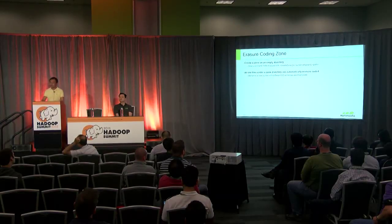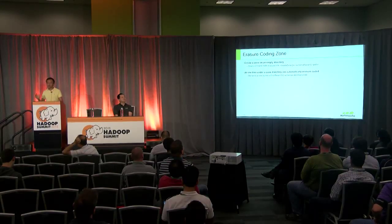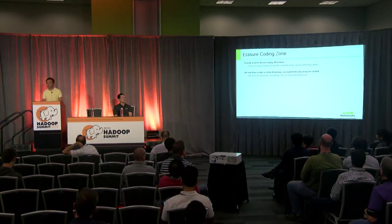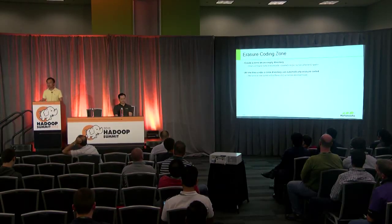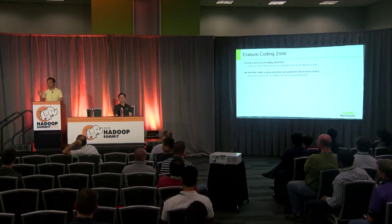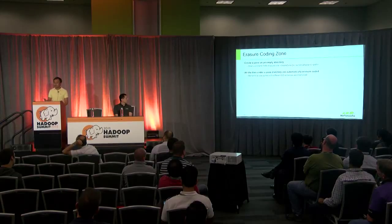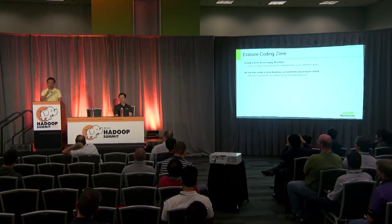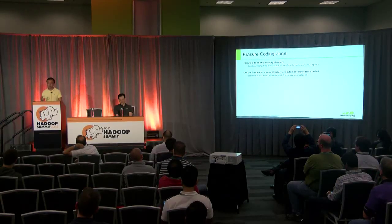On the name node side, we introduce a new concept: the EC zone — simply a directory. Administrators use a create zone command to convert an empty directory into an EC zone. All new files created under that EC zone directory are automatically erasure-coded. We don't allow moving or renaming across two different EC zones with different EC schemas. As a first stage, conversion between non-EC and EC, or between EC schemas, requires a distcp-style copy.